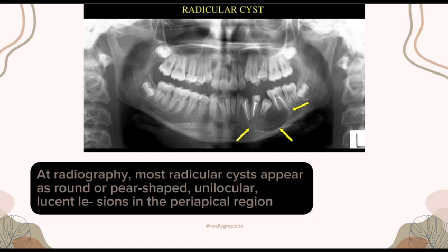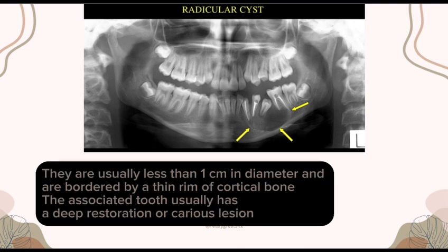...appear as round or pear-shaped, well-defined lesions in the periapical region. They are usually less than one centimeter in diameter and bordered by a thin rim of cortical bone. The associated tooth usually has a deep restoration or large carious lesion.